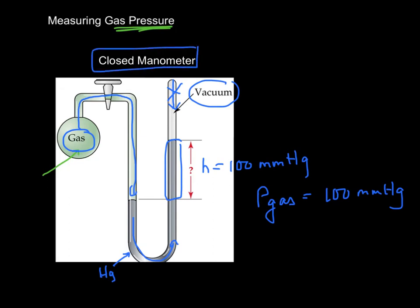A manometer is used for measuring gas pressure. And closed means it's closed up here, and there's a vacuum. So there's nothing pushing against it. Measuring a closed manometer is very simple. The pressure of the gas just equals the height of the column.